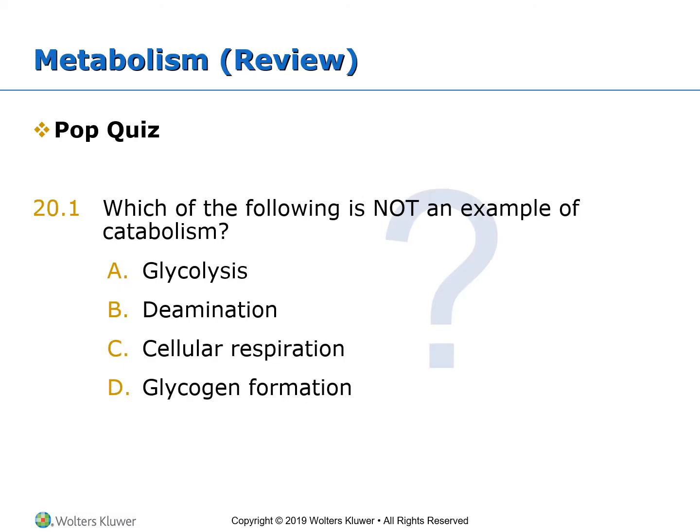Protein is not the preferred source of energy for our body. Fats and carbohydrates are described as protein-sparing sources of energy because they are used first, allowing the body to maintain its structure. Question: Which of the following is not an example of catabolism? A. Glycolysis. B. Deamination. C. Cellular respiration. D. Glycogen formation. The answer is D — glycogen formation is not an example of catabolism; it is an example of anabolism.